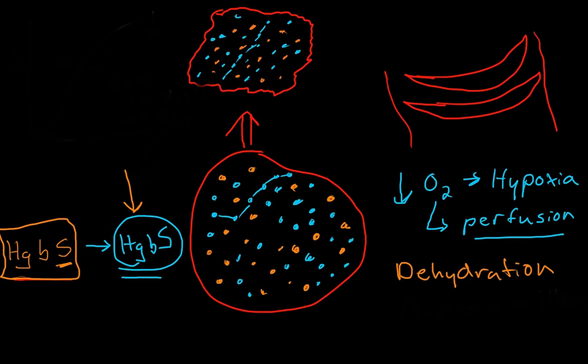And the last major factor that causes polymerization is acidosis.